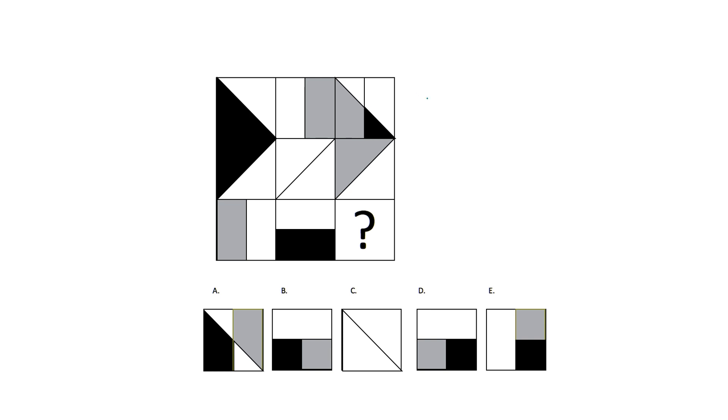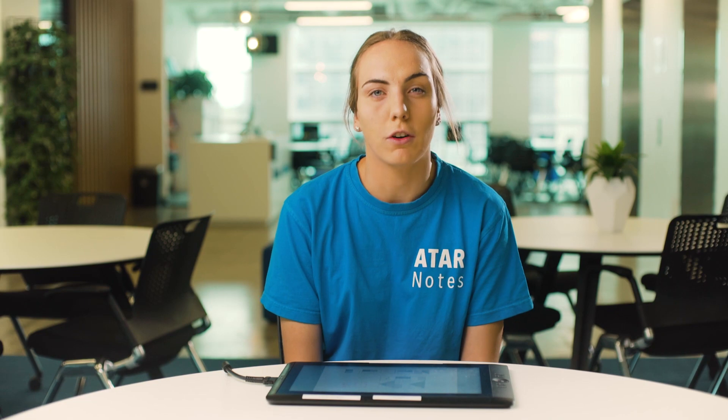Where black and white overlap in this section we end up getting a grey new image. Where the black overlaps with grey we get a black image. Where grey overlaps with white we get a white image. Now we have created a code that we can use to try and solve the problem.